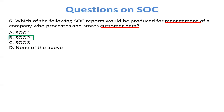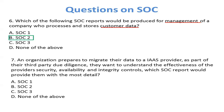Question 7: An organization prepares to migrate their data to an Infrastructure as a Service provider. As part of their third-party due diligence, they want to understand the effectiveness of the provider's security, availability, and integrity controls. Which SOC report would provide them with the most detail? The main keywords are security, availability, and integrity controls — that's cybersecurity and IT. So the correct answer is B, SOC 2 Type 2.